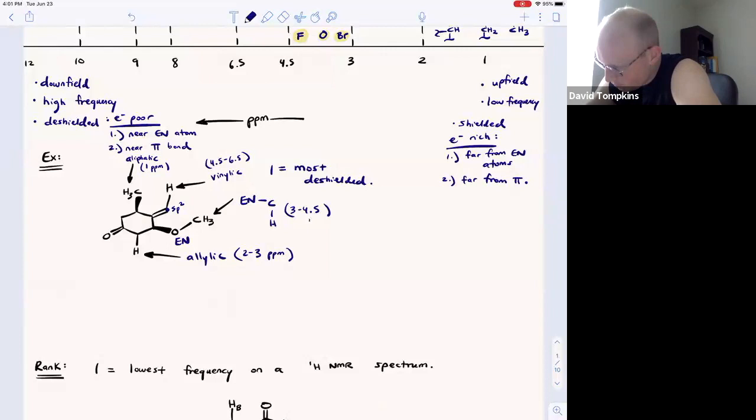If we say that number one is the most deshielded, then that's going to be the vinylic proton first, followed by the proton adjacent to the electronegative atom, followed by the allylic proton, and the aliphatic proton on the sp3 carbon that is far from pi bonds and far from electronegative atoms. That is going to be the most upfield.